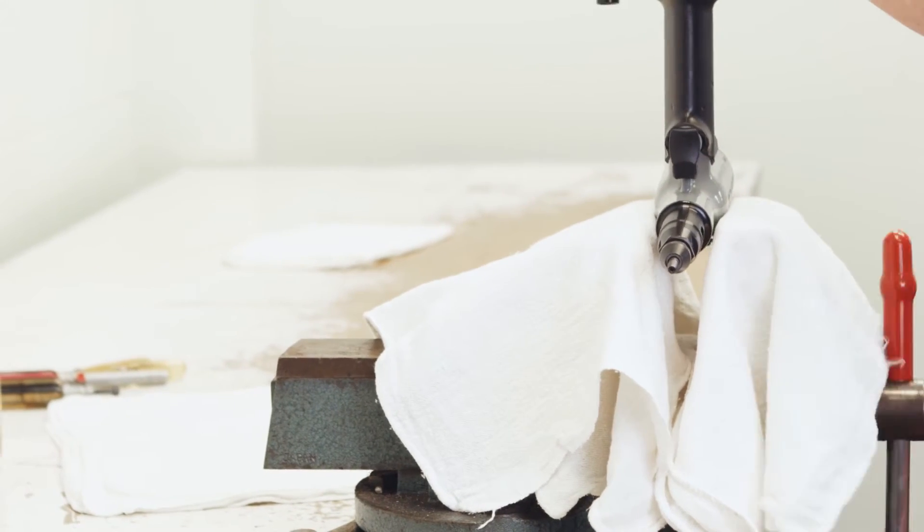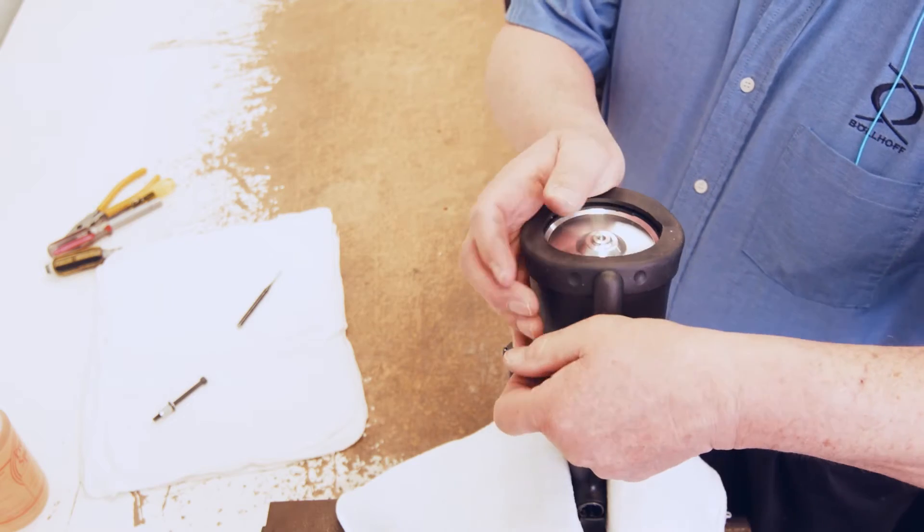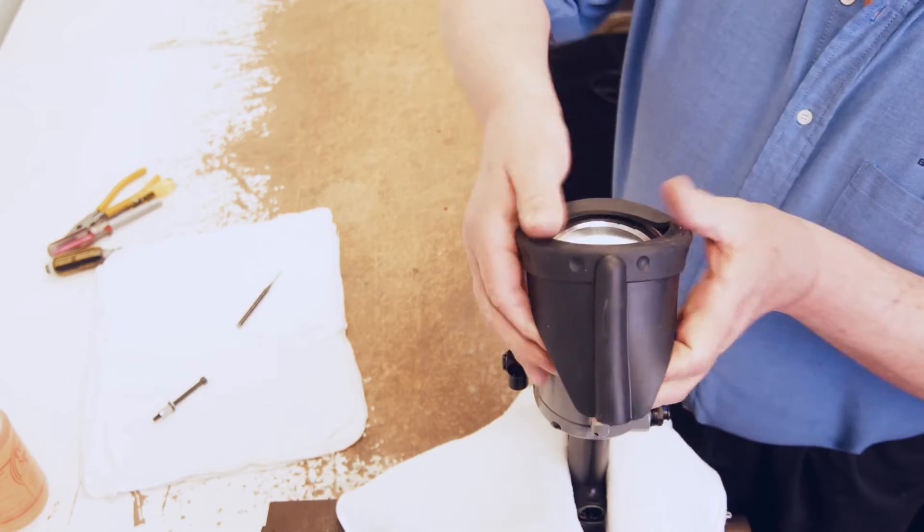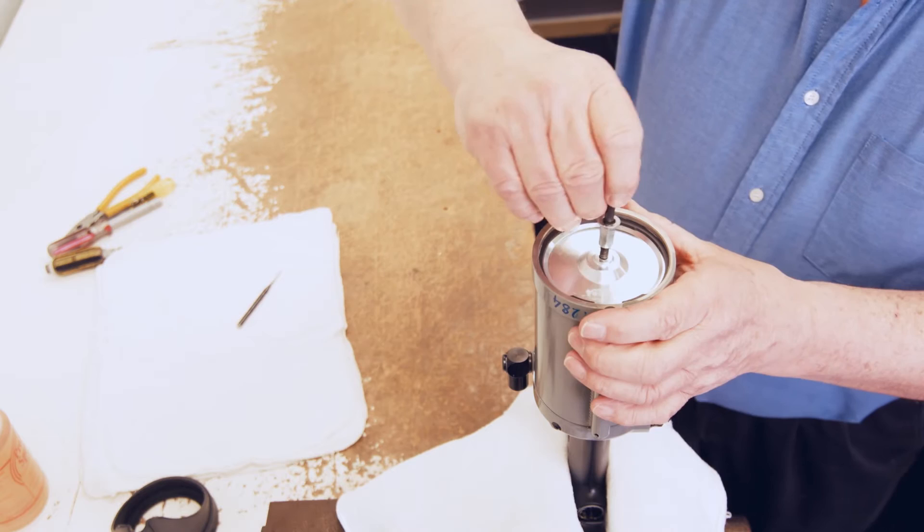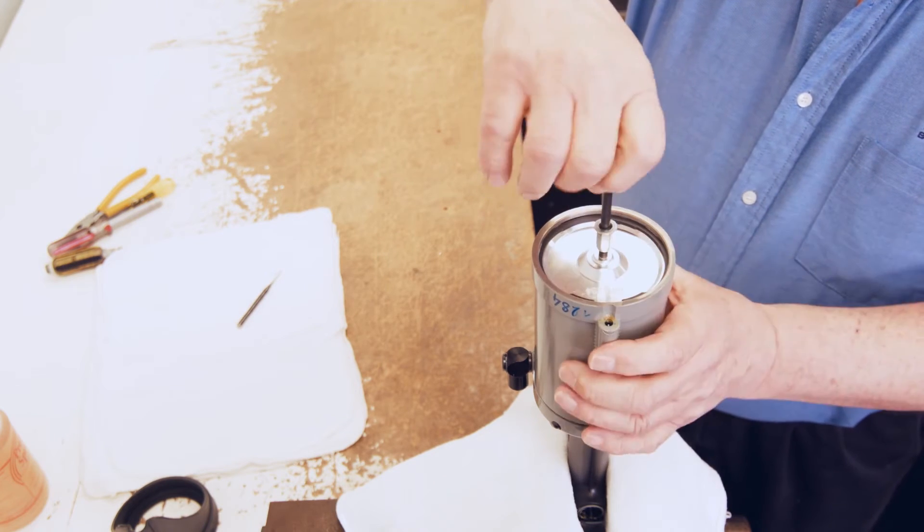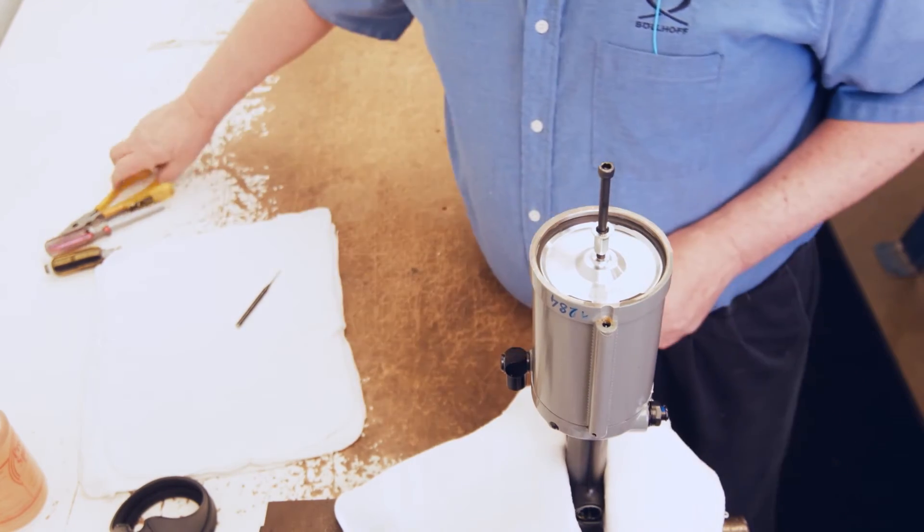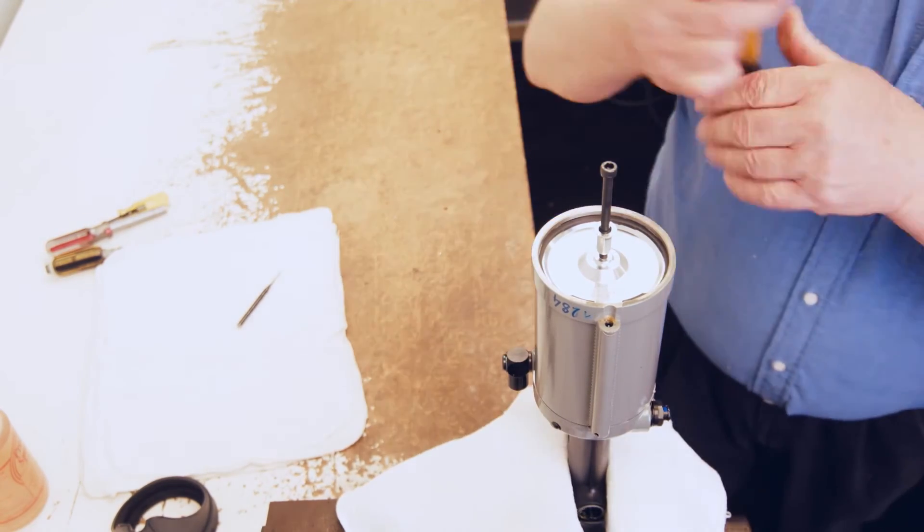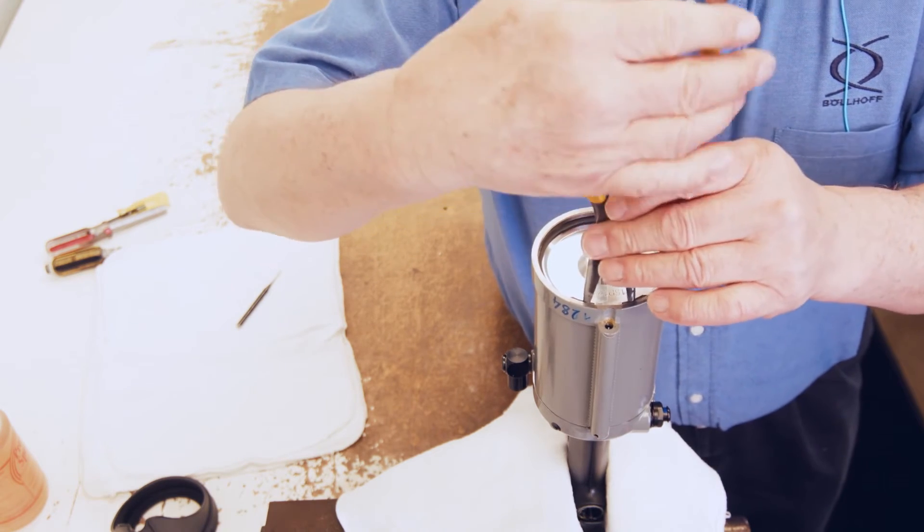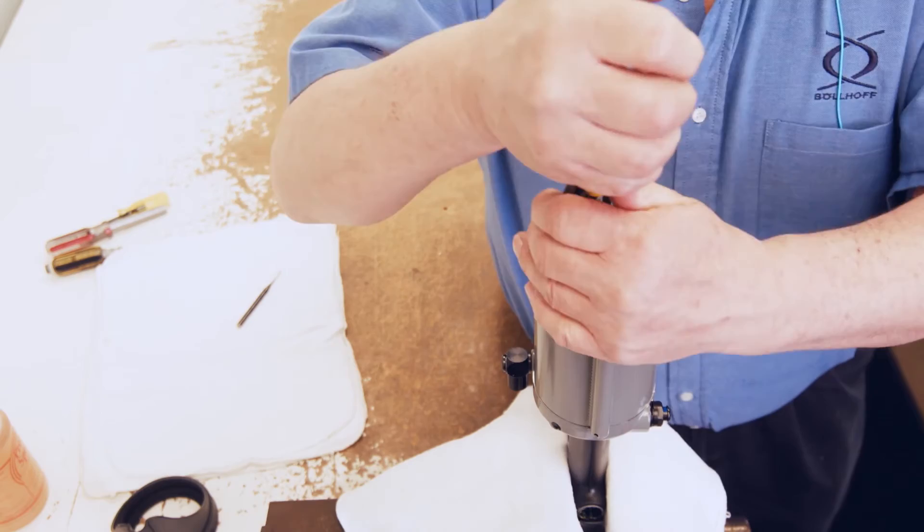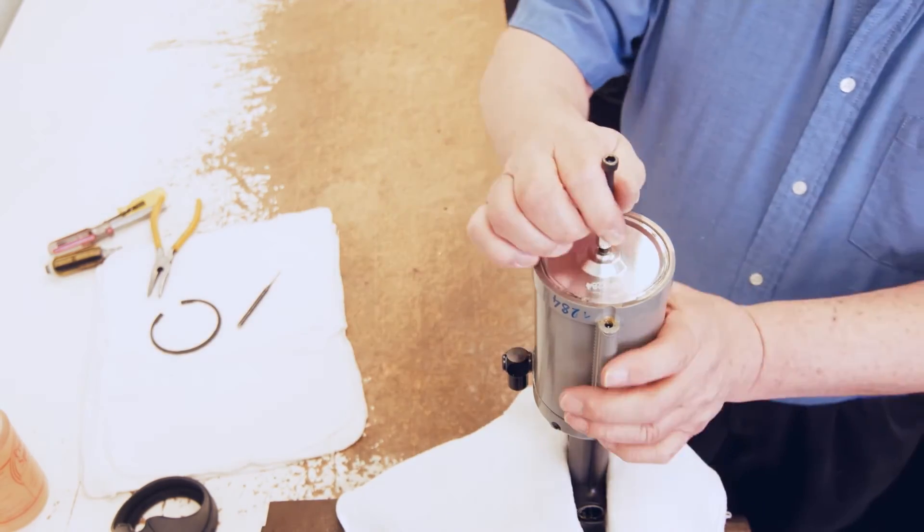Step one, disconnect the airline and install tool into a bench vise as shown in the video. Step two, remove the black rubber boot. Step three, install an M6 fastener on the bottom cap for stability and grip. Step four, remove the snap ring. Step five, remove the bottom cap.